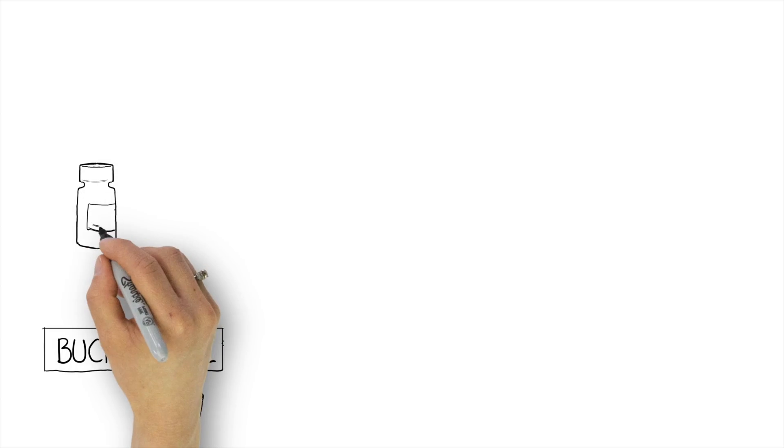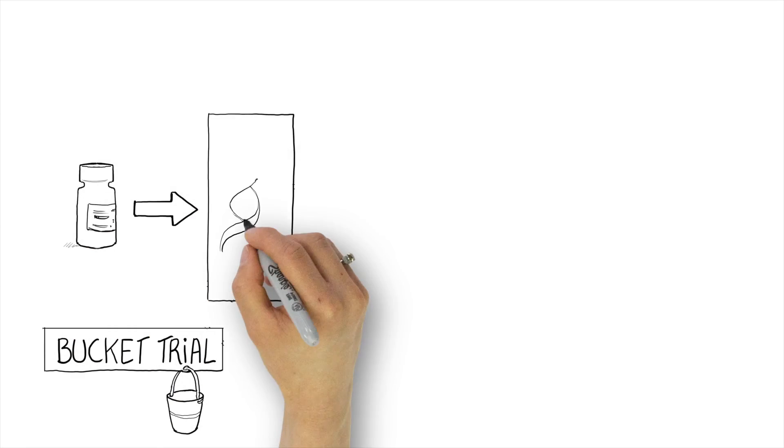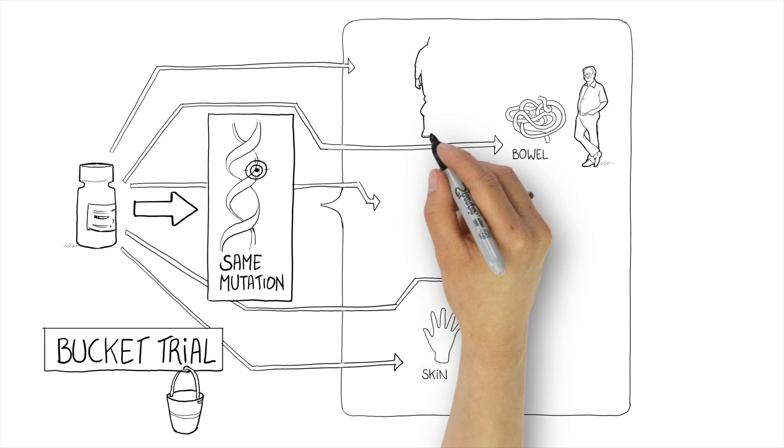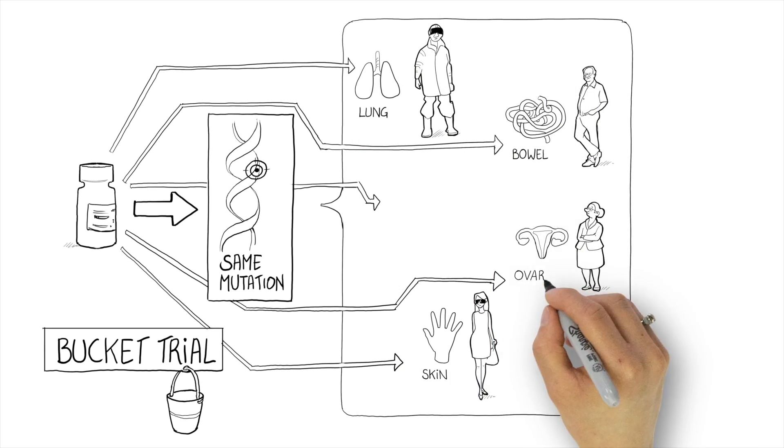A bucket trial is the opposite. One medicine that targets a specific mutation is tested in many different types of diseases, for example, different cancers like skin, bowel, and lung cancer that all contain the mutation in question.